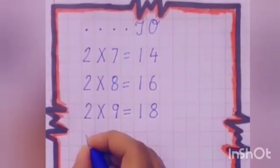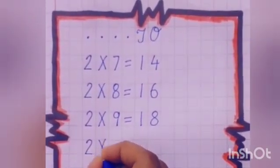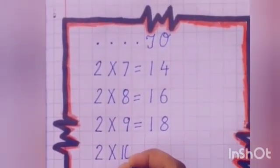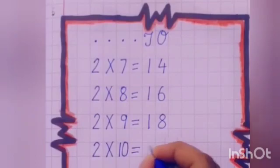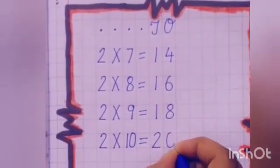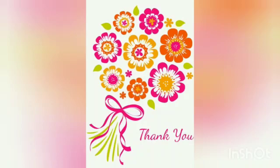And now, 2 10s are... We will write 10 in a single block. 2 10s are 20. Now, dear kids, it's your turn to learn and write the Table of 2 in your notebook in a proper manner. Thank you. Bye-bye.